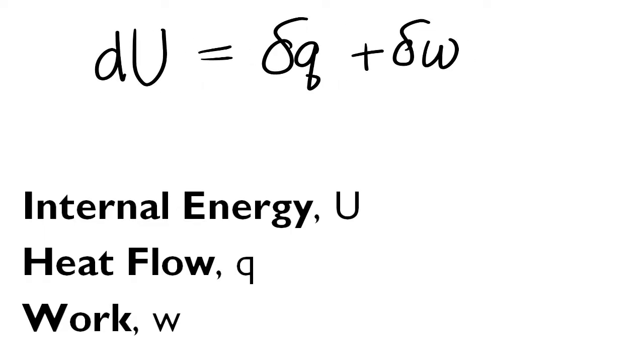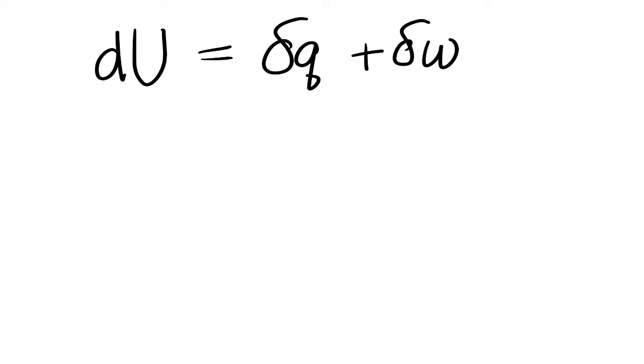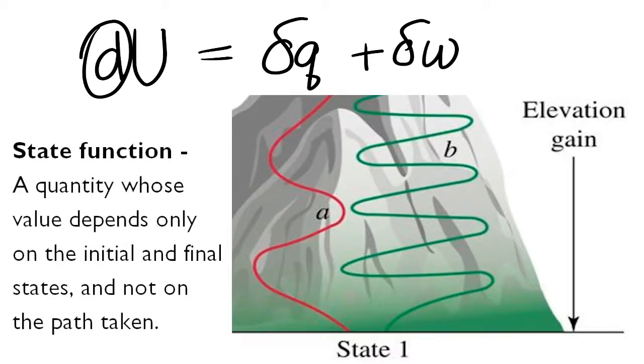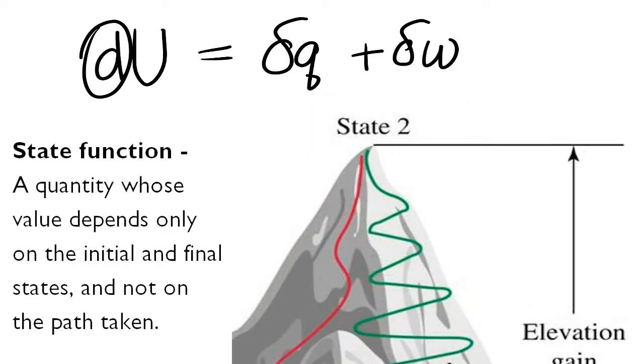When we write D like this, we're saying that the function is a state function, and so it does not depend on what path you take, only on the final and the initial states that you know.